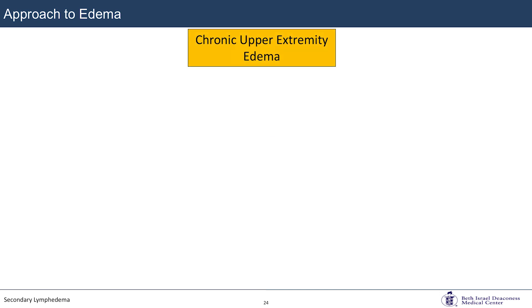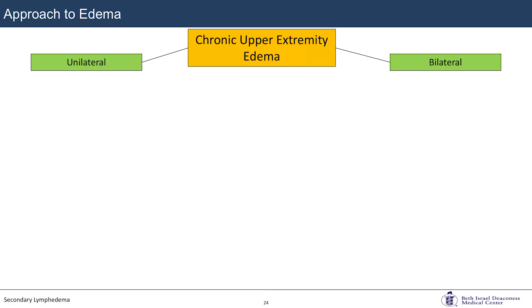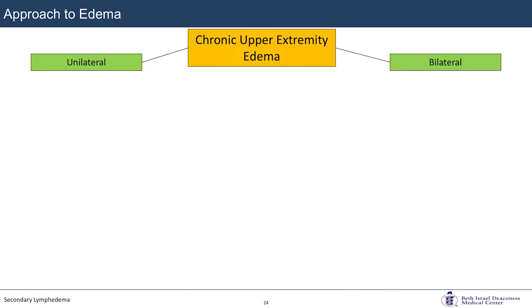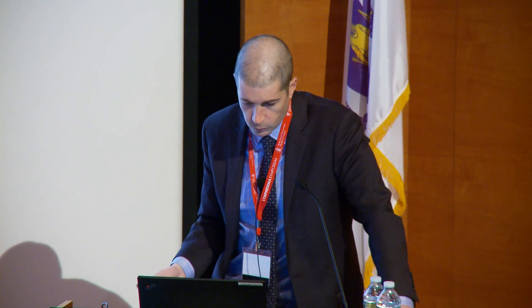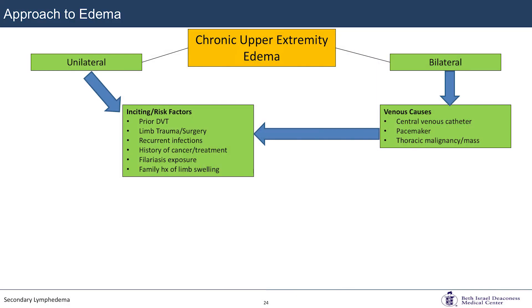For upper extremity edema, the differential is more straightforward. For bilateral upper extremity edema, unless there have been bilateral insults to lymphatic function, it's likely a venous cause — look for a central process: history of central venous catheter for dialysis or chemotherapy port, pacemaker, thoracic malignancy, or SVC syndrome. For unilateral upper extremity edema, the same list of exposures as the lower extremity applies. Physical exam remains key.